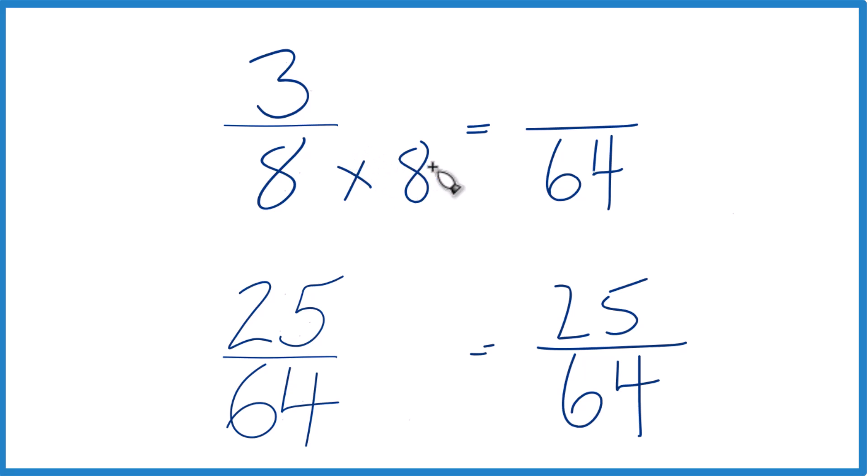Up here, I multiplied the denominator by 8, I have to multiply the numerator by 8. Because 8 over 8, that's just 1, so I'm multiplying by 1. Don't change the value, just the way it's written. 3 times 8 is 24.